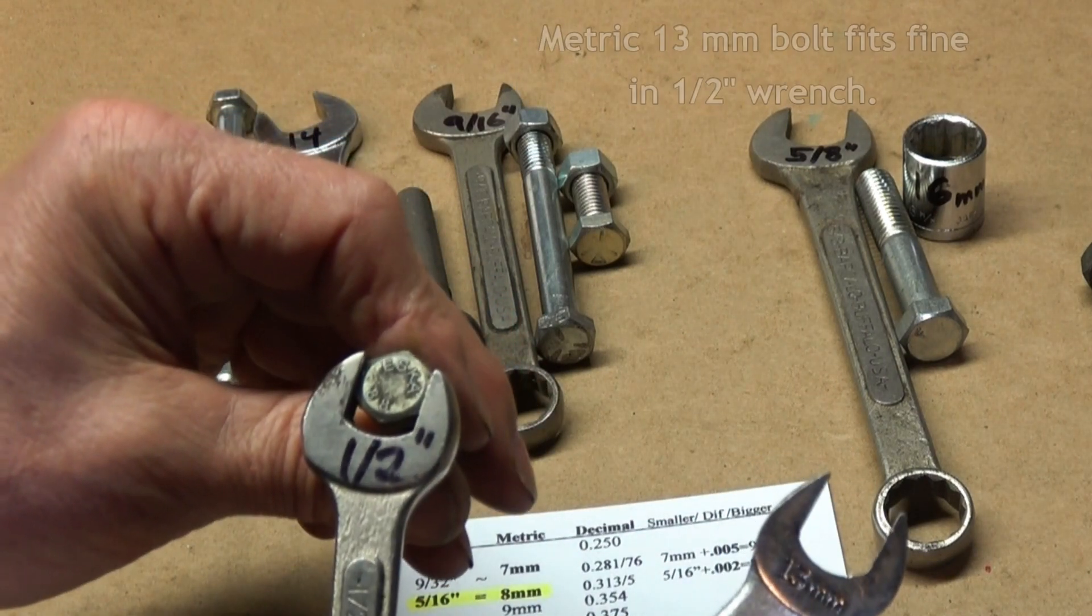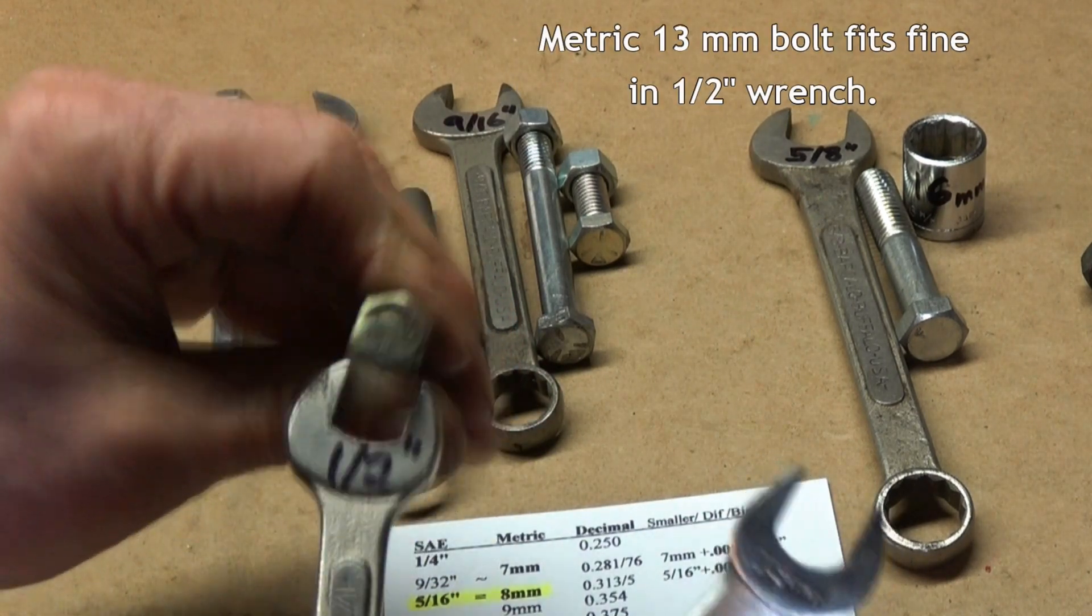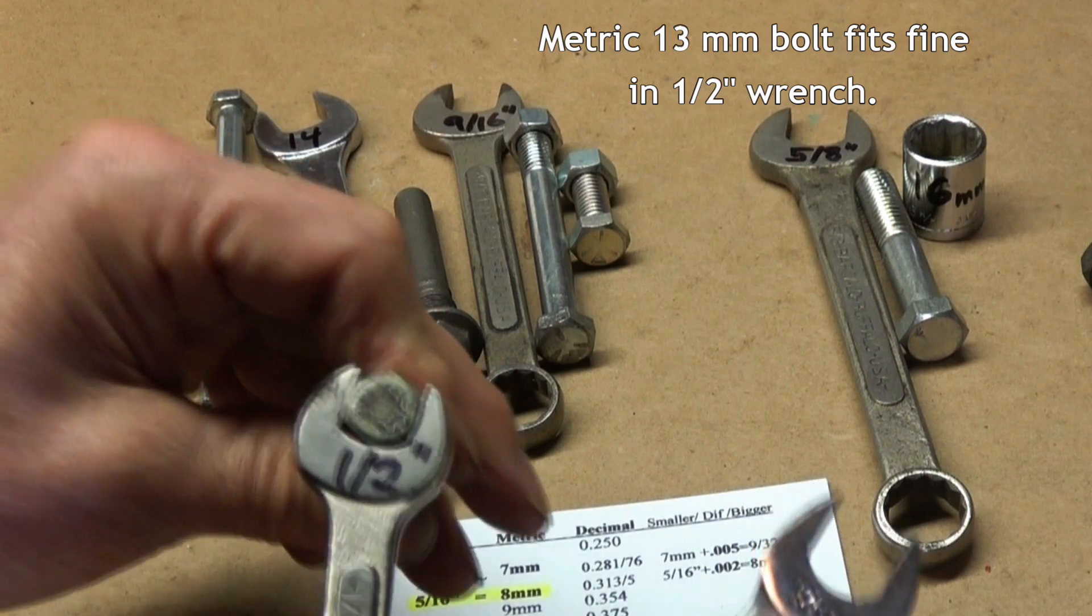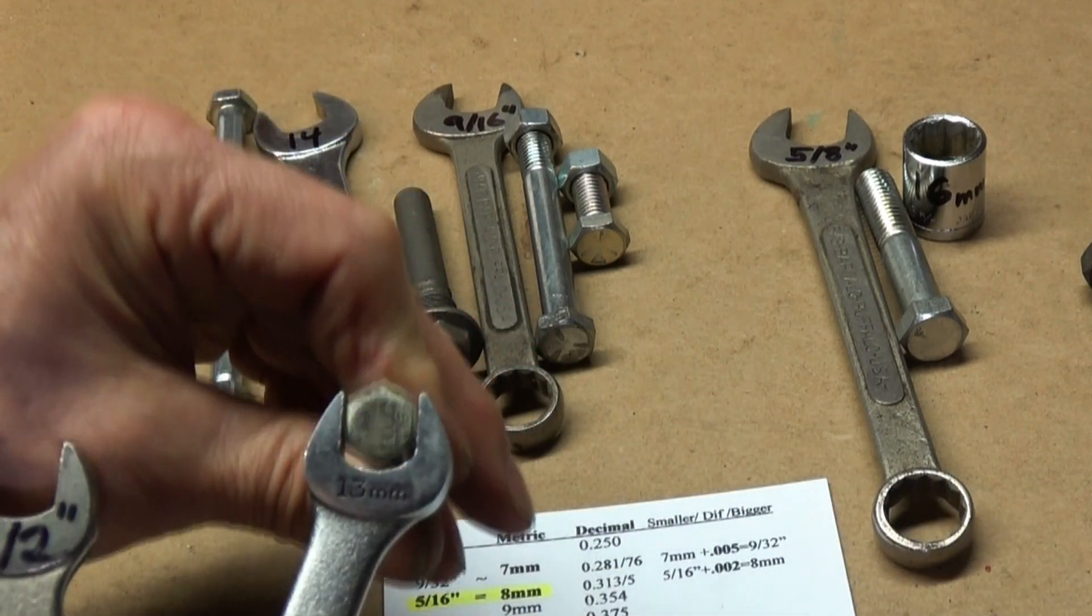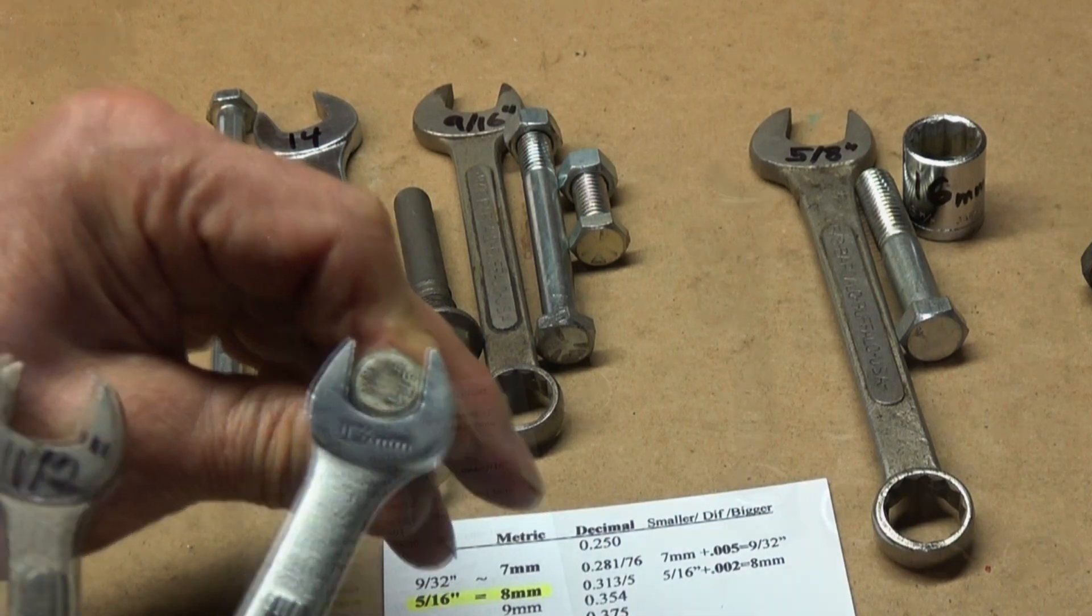We know this bolt is metric because it says 8.8 on the head, a common metric marking, and even though it's metric, it fits nice and snug in the half inch wrench, a little looser in the 13 millimeter.